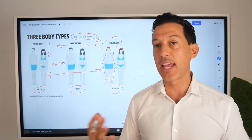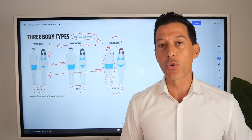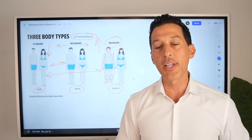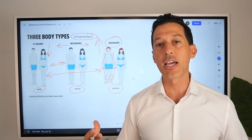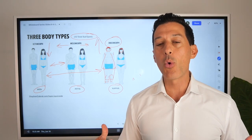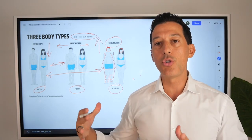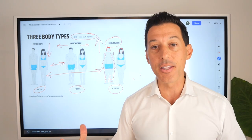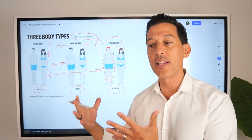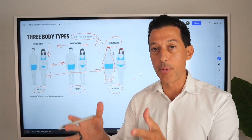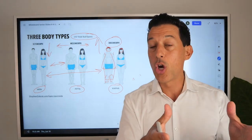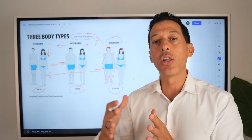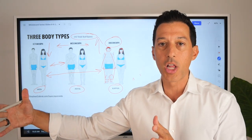Typically no one is a hundred percent of any one body type, though there are some people who are predominantly one type — I've seen this many times in my practice, having completed over a quarter of a million client appointments. What I want you to know is this: the more you know about your unique body type, the more you know how to keep your body in balance. And when your body's in balance, that means you're at a healthy body weight, your body is healthy, no dis-eases of the body, and you age a lot more gracefully.